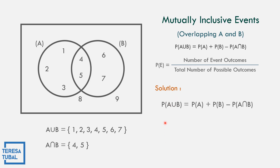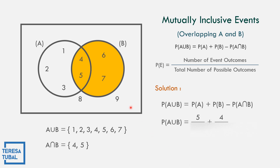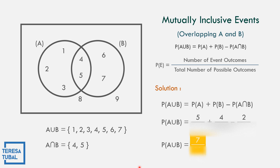The probability of A union B: event A has 5 elements out of 11 total. How to get 11? Event A has 5, event B has 4, and outside both events that is 2, so 5 plus 4 plus 2 equals 11. Event B has 4 elements over 11. The probability of the intersection of event A and B is 2 over 11. So solving: 5 plus 4 minus 2 equals 7. The probability of A union B equals 7 over 11.